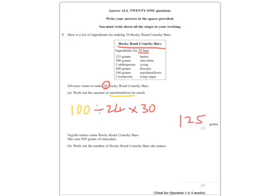Anyway, Nigella makes some Rocky Road Crunchy Bars, she uses 850 grams of chocolate. Now there are a few ways of doing this, but ultimately we could see 850 is what she's used, and we know that it's chocolate, so she used chocolate here.